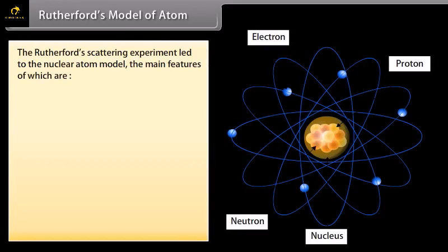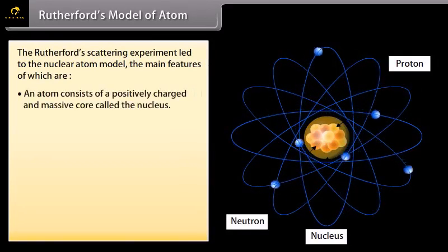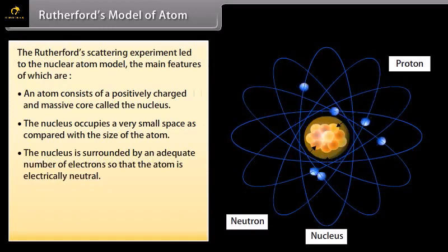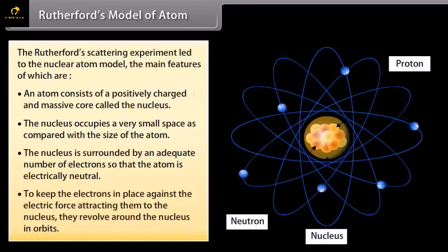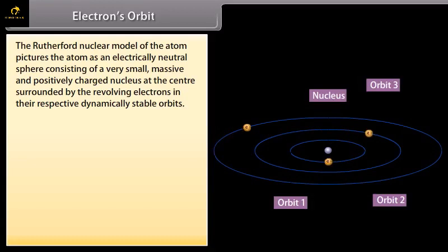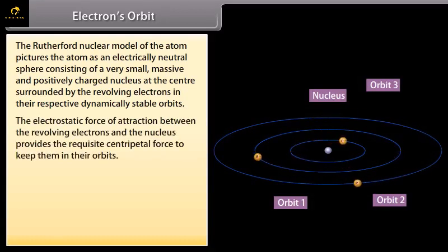Rutherford's model of the atom: The Rutherford scattering experiment led to the nuclear atom model. An atom consists of a positively charged and massive core called the nucleus. The nucleus occupies a very small space compared with the size of the atom, and is surrounded by an adequate number of electrons so that the atom is electrically neutral. Electrons revolve around the nucleus in orbits. The electrostatic force of attraction between the revolving electrons and the nucleus provides the requisite centripetal force, so Fe equals Fc.